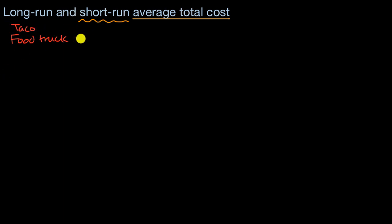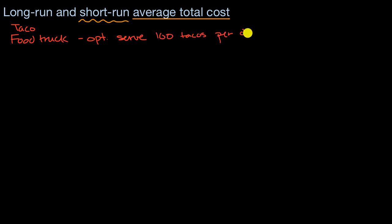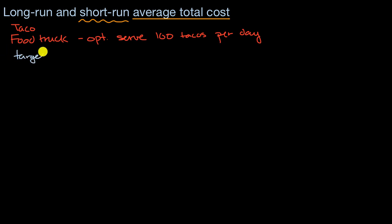Each food truck can optimally serve 100 tacos per day. We haven't started our business yet, but we have to decide how many food trucks to buy. We do some market research and feel pretty confident that we're going to be able to sell 200 tacos per day. So we're going to target 200 tacos per day.